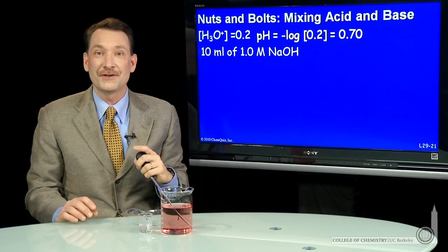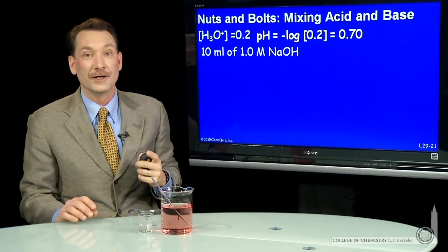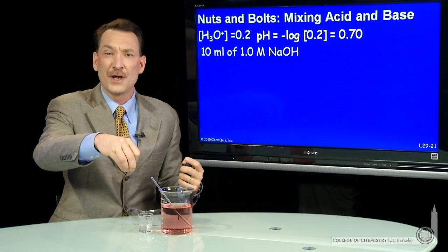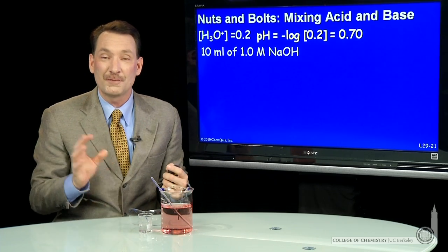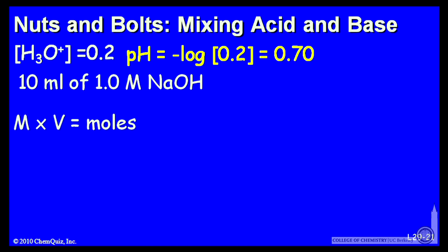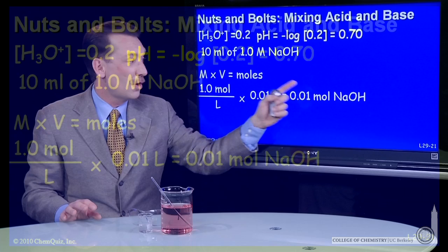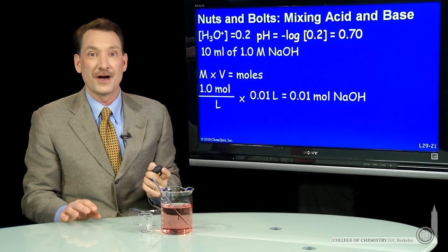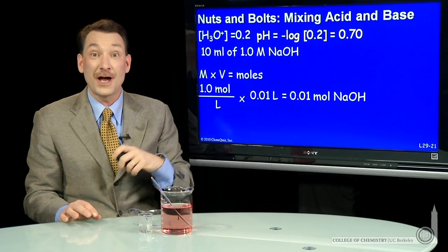Now, we want to add 10 mils of sodium hydroxide at one molar. How many moles of OH minus is that? I want to figure out how many moles of OH minus I'm putting in, because they're going to react with my H3O plus. So molarity times volume equals number of moles. The molarity, one mole per liter, times the volume in liters, 0.01, that's 10 milliliters, is 0.01 moles of sodium hydroxide. If I add 0.01 moles of sodium hydroxide, I'm actually adding 0.01 moles of hydroxide ion.